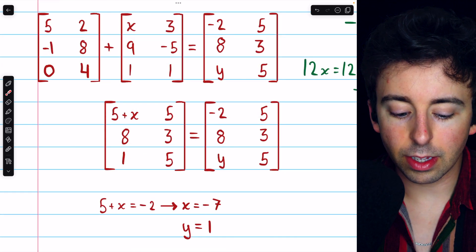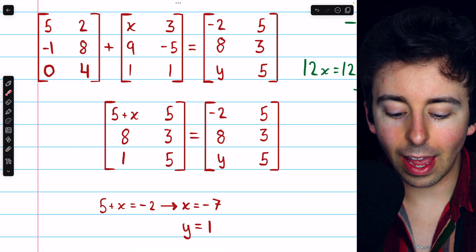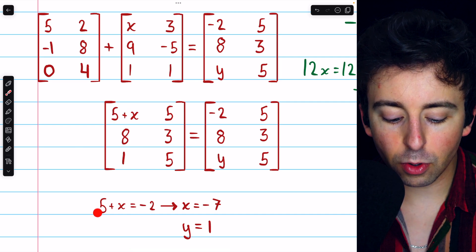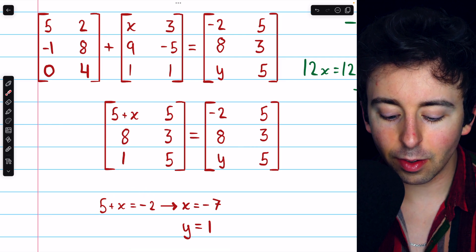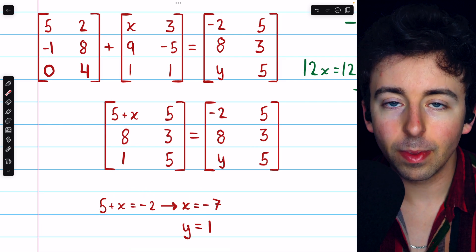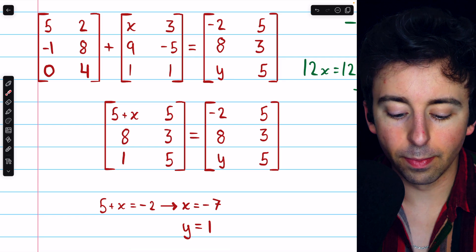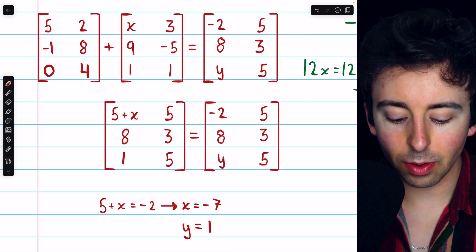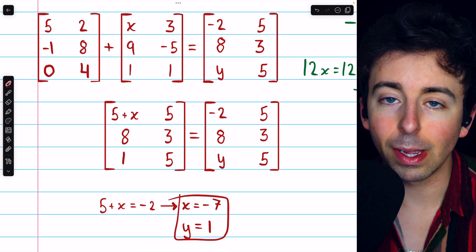And that's how easy it is to solve for these variables. Setting 5 plus x equal to its corresponding entry, negative 2, we can subtract 5 from both sides to find that x is negative 7. And as we already said, 1 must equal y, or y equals 1. And so that's the solution to this final matrix equation.